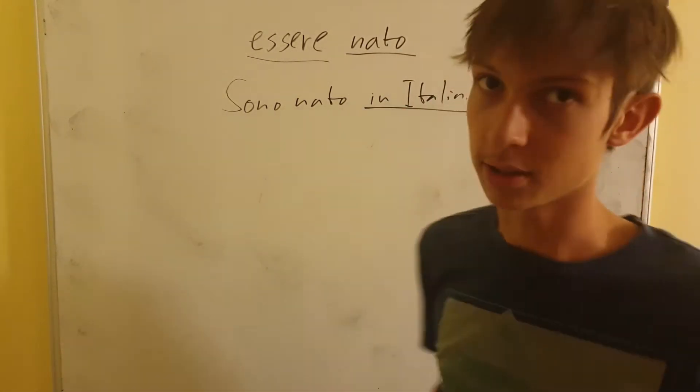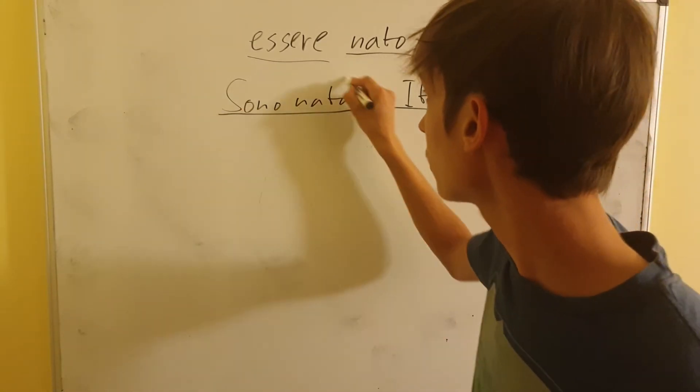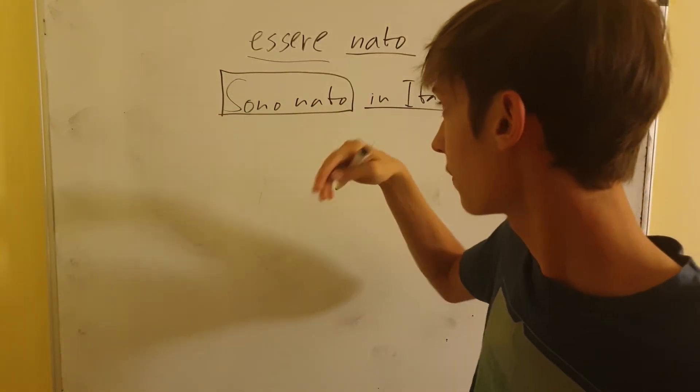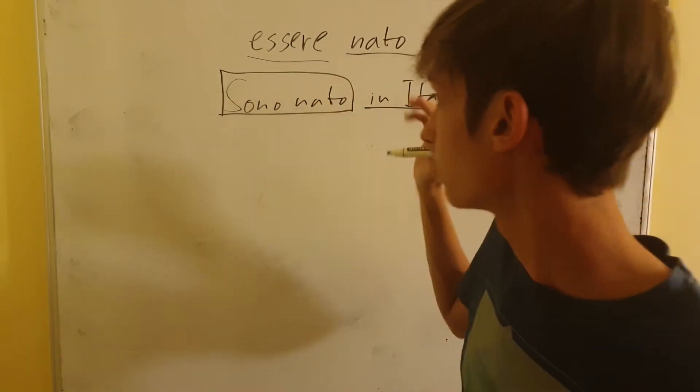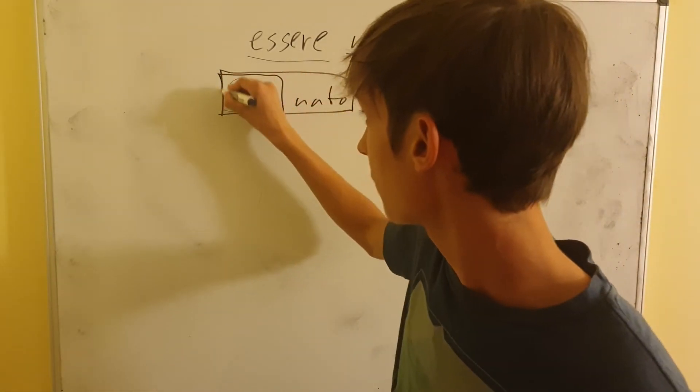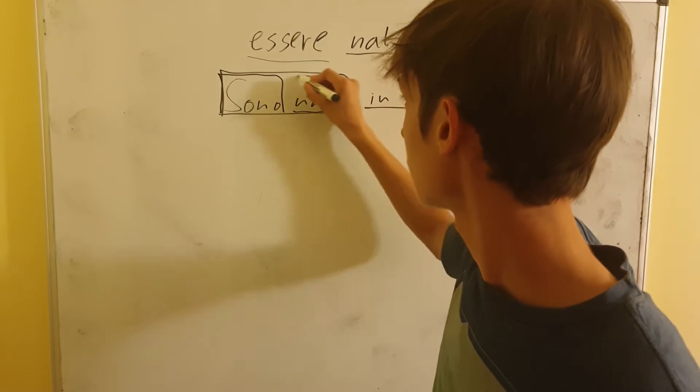In Italia means in Italy, of course, and sono nato is the past participle of being born. So I was born. Sono is I am, nato is born.